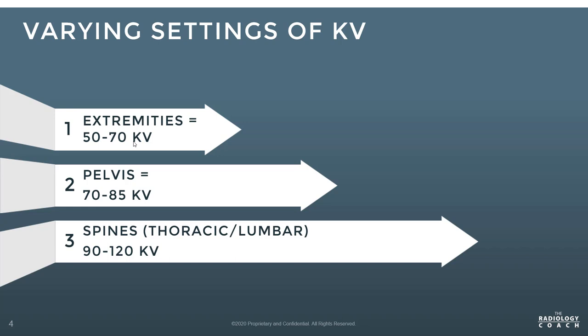So 65–70 KV is recommended. As a comparison, pelvis x-rays — moving out of extremities into thicker parts of the body — typically use 70 to 85 KV. The pelvis deals with the hips and pelvic region. Then for spines, particularly thoracic and lumbar, we use 90 to 120 KV. So you can see the wide variety of KV settings utilized across different x-ray examinations.